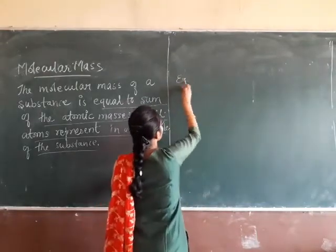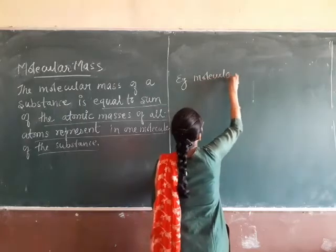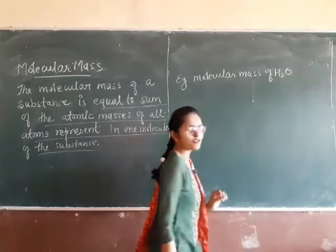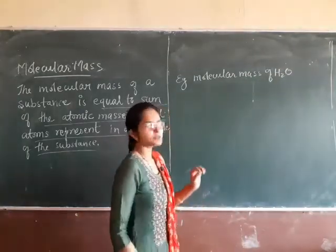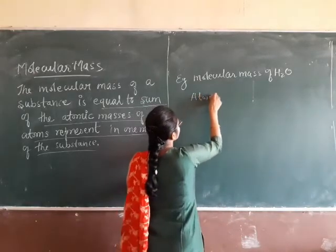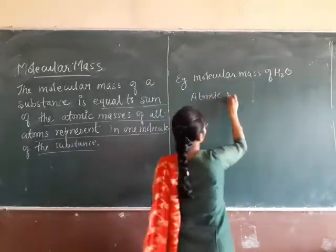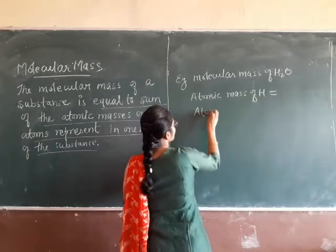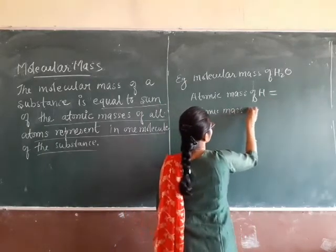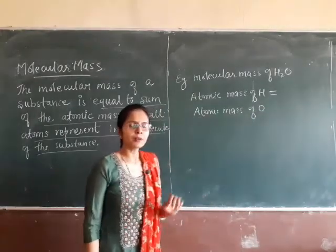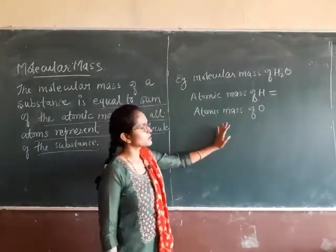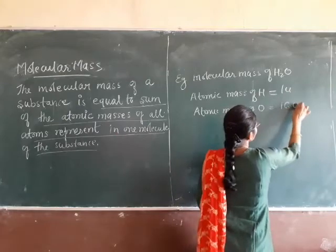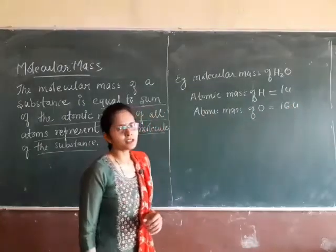Example: Find the molecular mass of water. First step - write the atomic mass of each atom present. Refer to your atomic mass table. Atomic mass of hydrogen is 1U, and atomic mass of oxygen is 16U. Water is H2O - it has 2 hydrogen atoms and 1 oxygen atom.